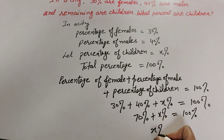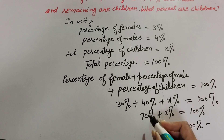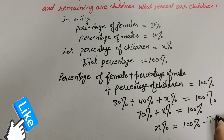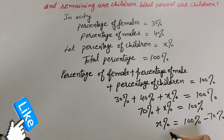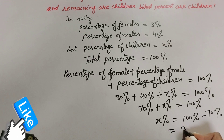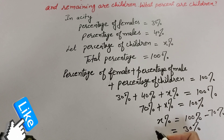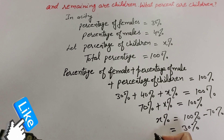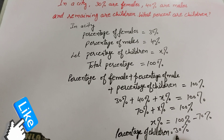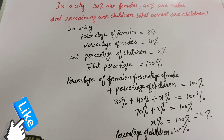Transposing 70 percent to the right-hand side, we subtract it: 100 minus 70 equals 30 percent. So the percentage of children in a city is equal to 30 percent. Thanks for watching — like, comment, and share my video, and subscribe to my YouTube channel.